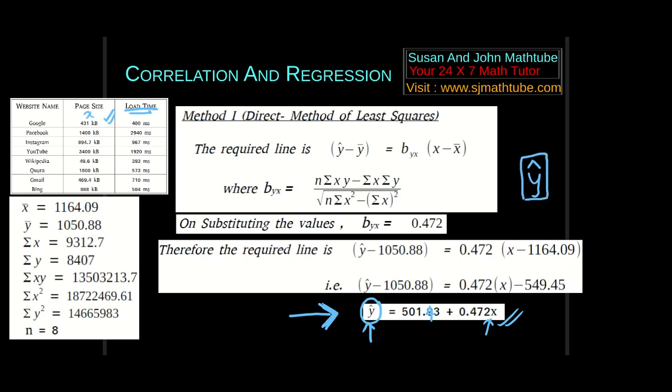We have a habit of writing y cap. This is to signify these are created values not the exact values. If you plot the data it will be scattered. What you did is you created a line in such a way that all the points are nearby. Remember whatever you predict using this equation will not be exact.